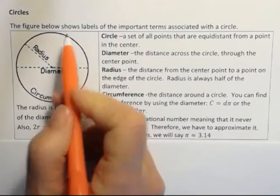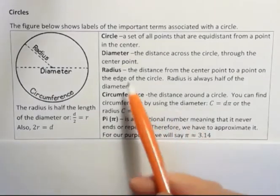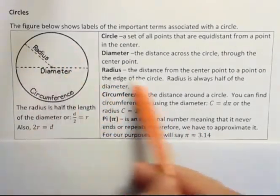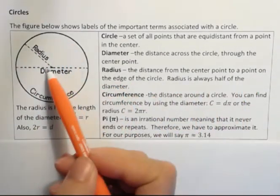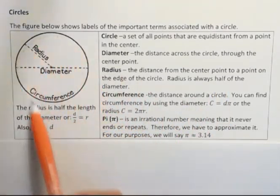So if this is your center point, every point on the circle is the same distance from it. The radius is the distance from the center to a point on the edge of the circle. And the circumference is the distance around the circle.